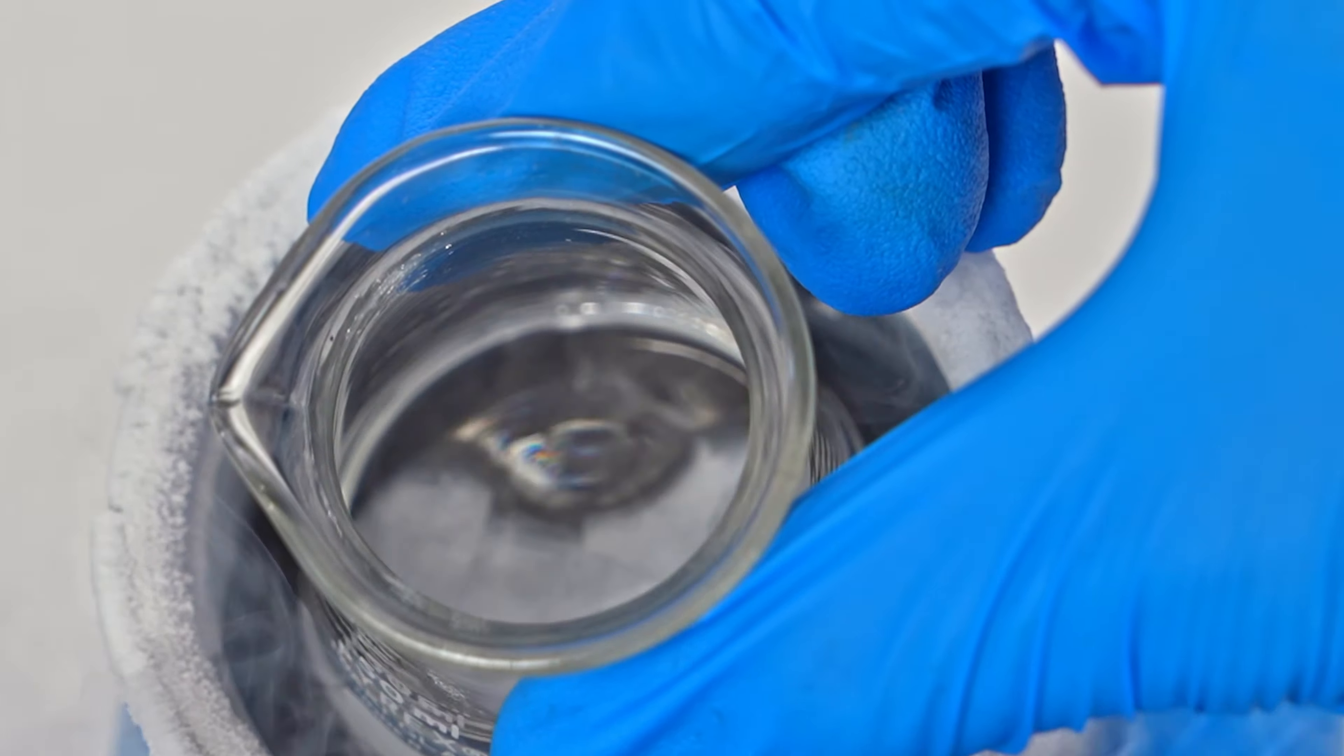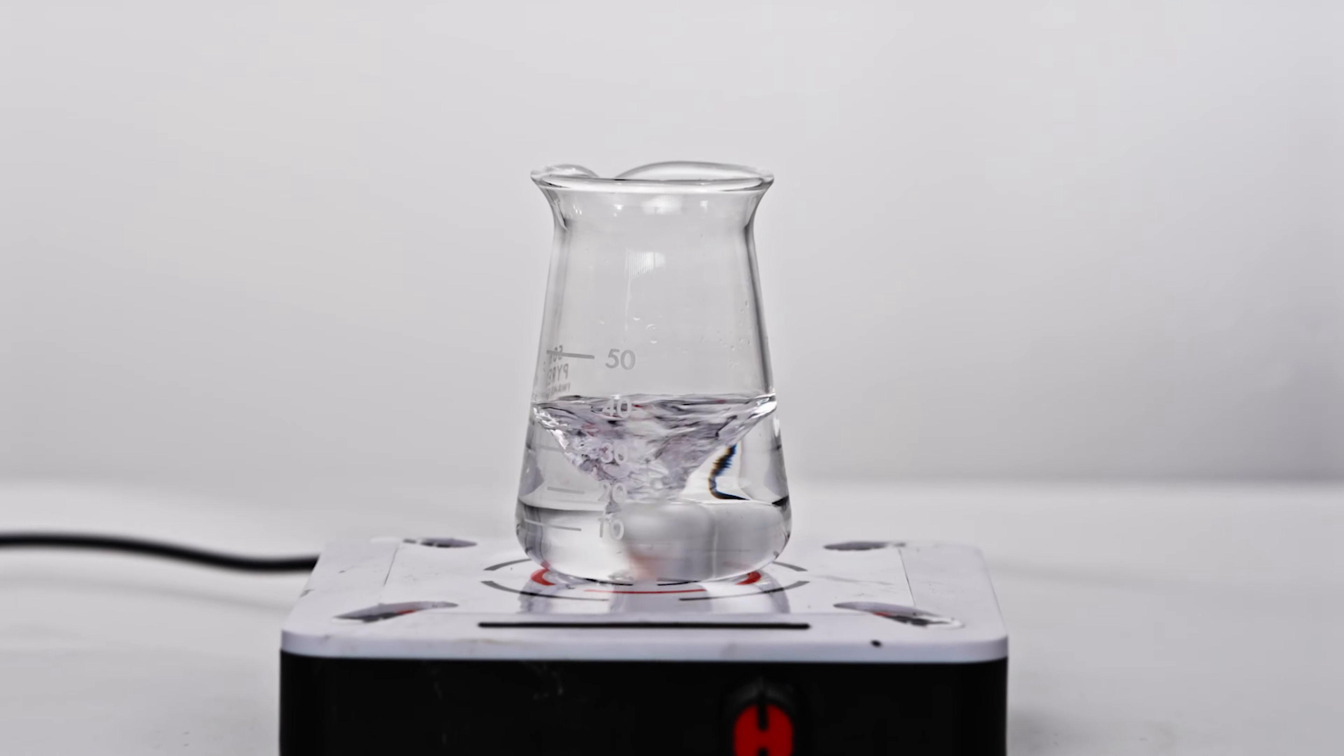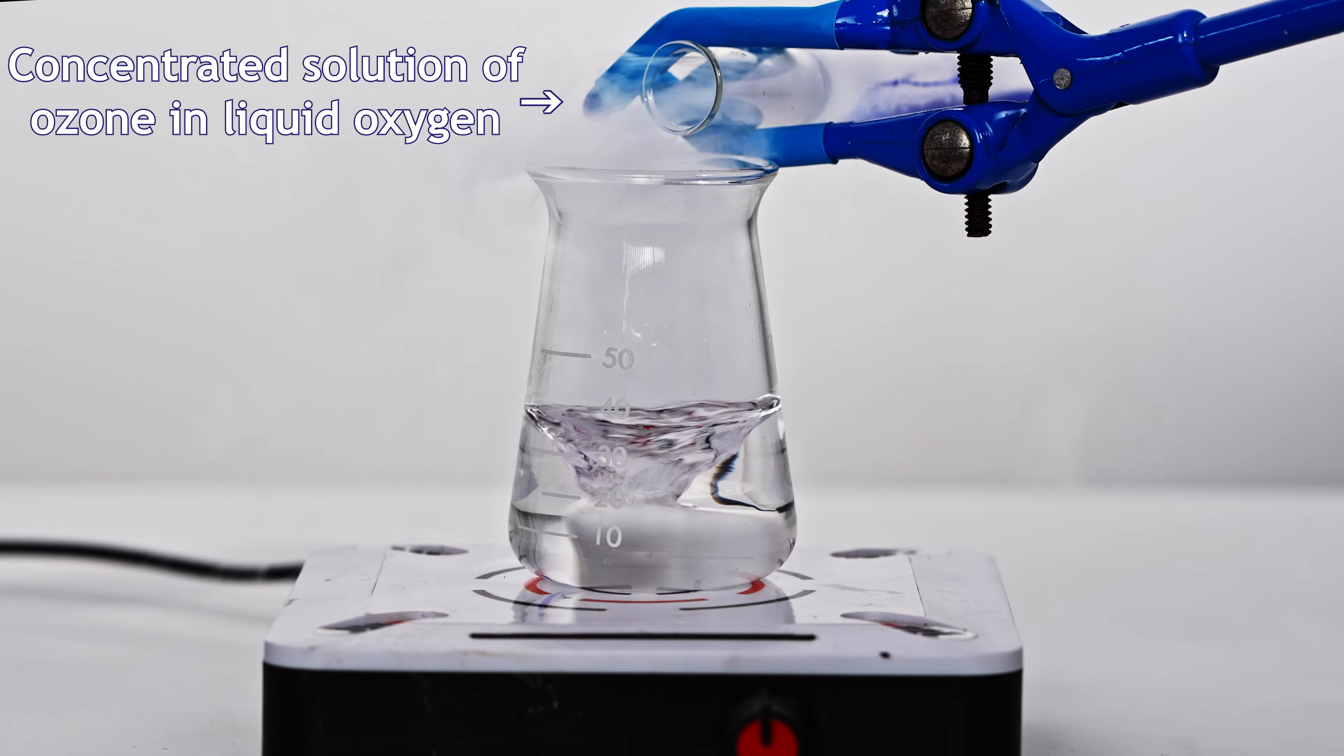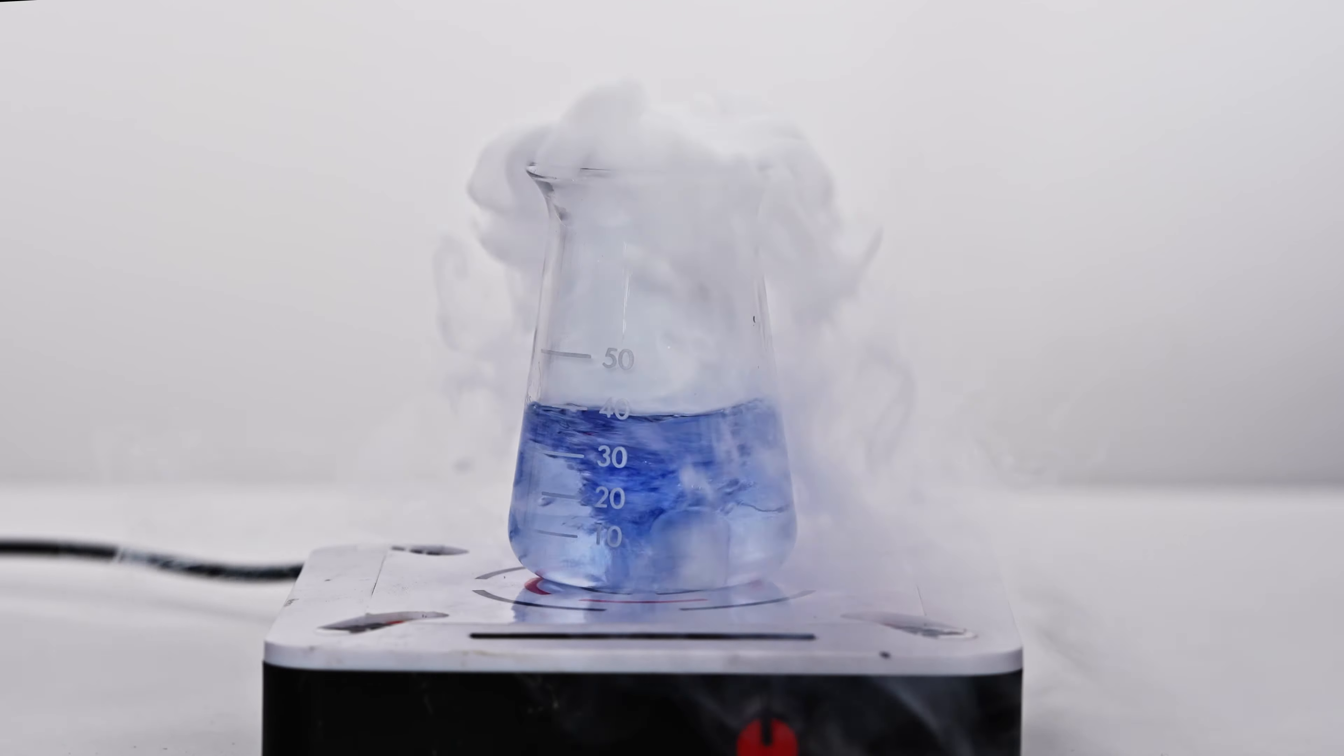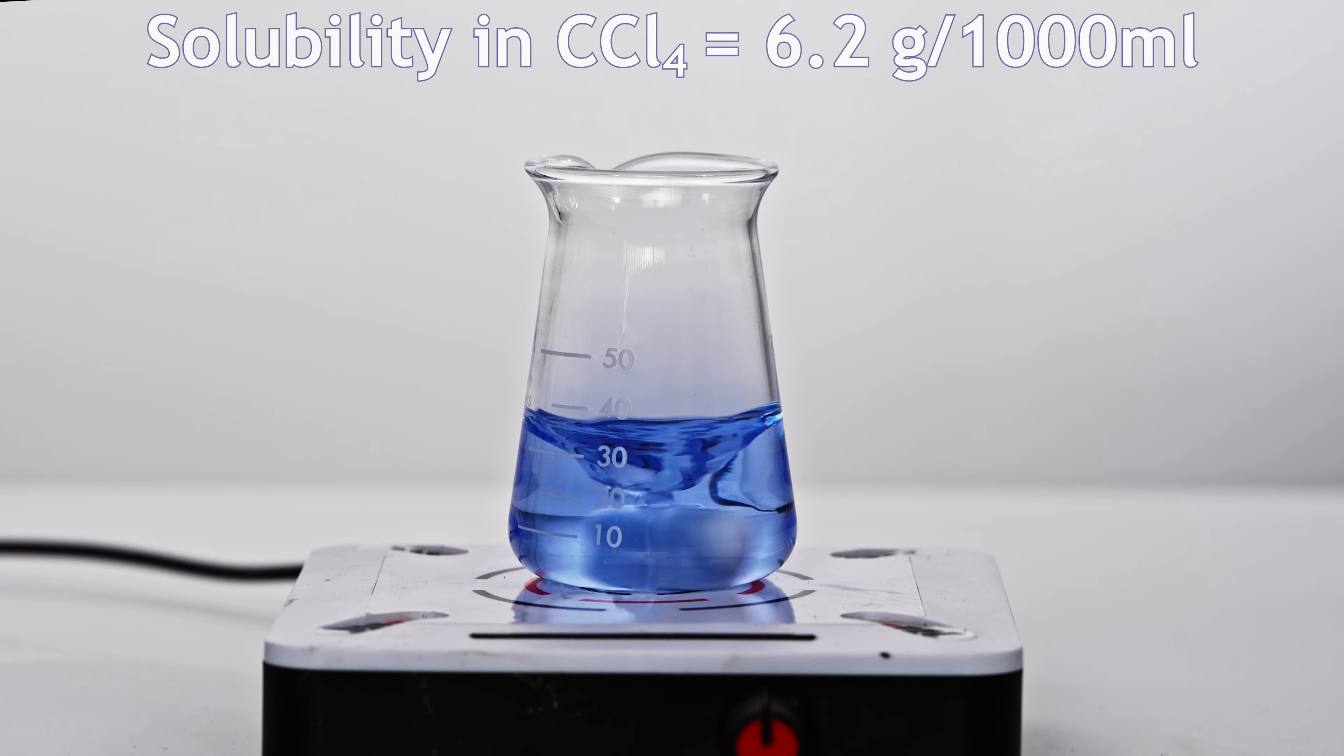To achieve this, I cooled the beaker of tetrachloromethane, and while stirring, I added a concentrated ozone solution in oxygen. Ozone's solubility in tetrachloromethane is a little over 6 grams per 1 liter of solvent. As it dissolves, the solution turns blue, with the intensity depending on the ozone concentration.